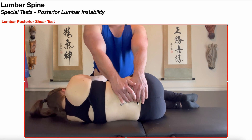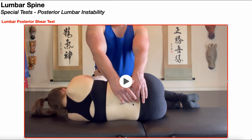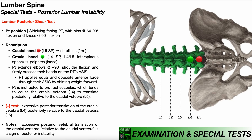Similar to the anterior shear test, in the posterior shear test, if there's no posterior instability, you shouldn't feel anything significant or noticeable on your fingertips. However, in the case of a positive posterior shear test, you should feel excessive posterior translation of the cranial vertebra — in this case L4 — posteriorly relative to the caudal vertebra L5. And that would indicate posterior instability at that particular segment.